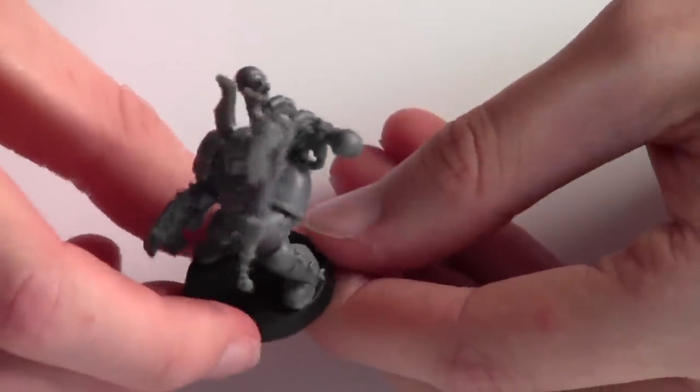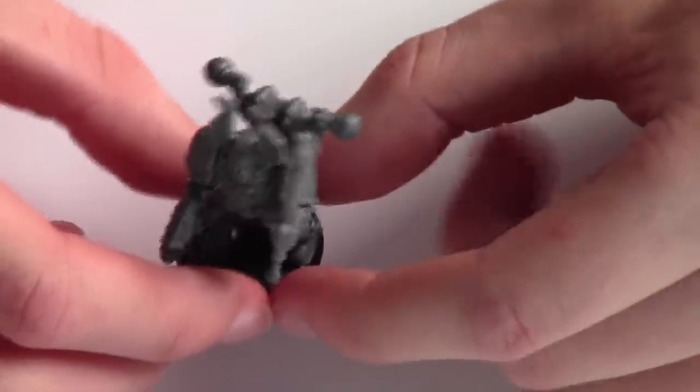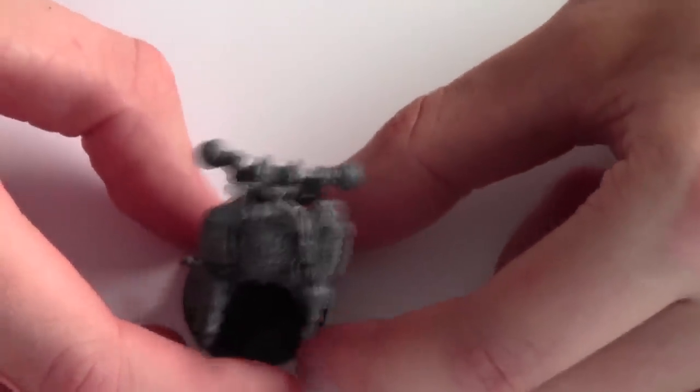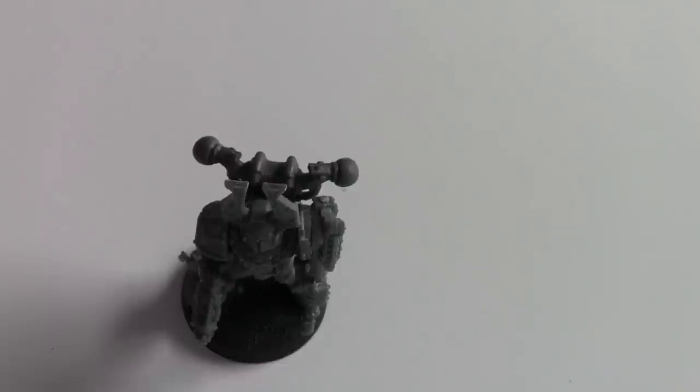So join us in the next episode where hopefully we'll be showing you how to thin paints properly before you actually get to start off painting. So using paint thinners, water, tension breakers, things like that. We'll show you some really good tips on thinning paint. And I hope you've enjoyed this episode on how to prepare models for painting.